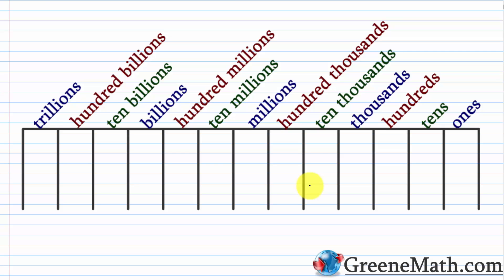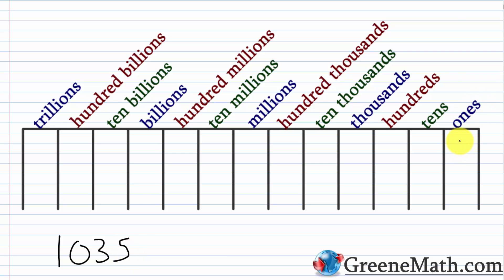Let's say I take the number 1,035 and write it in expanded notation. The first thing we need is the place value for each digit. Let's feed this into the place value chart. Starting with the rightmost digit, the 5 goes into the 1s place. Moving left, the 3 goes in the 10s place, the 0 goes in the 100s place, and the 1 goes in the 1,000s place. Now that we know the place value for each digit, we can write the number in expanded notation.